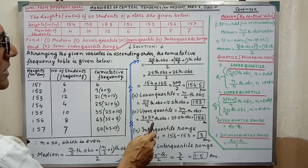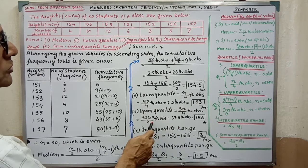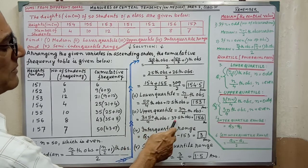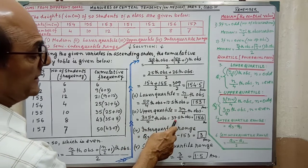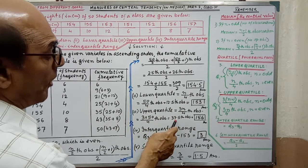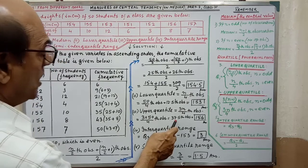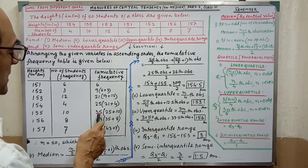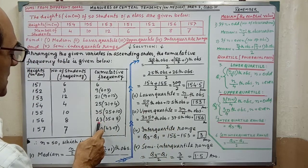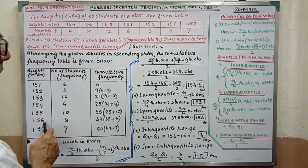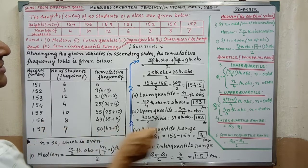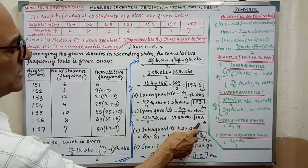For the upper quartile, after writing the formula and putting in the value, we simplify to get the 37.5th observation. Looking at the cumulative frequency table, the 37.5th observation — at cumulative frequency 35 to 37 — falls in the class giving Q3 equals 156.